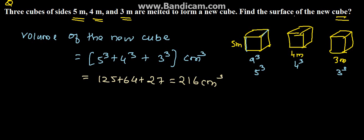So 216 centimeter square is the volume for the new cube. Now we need to find the surface area of the new cube.